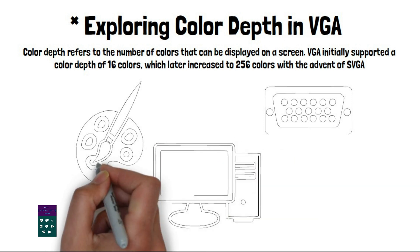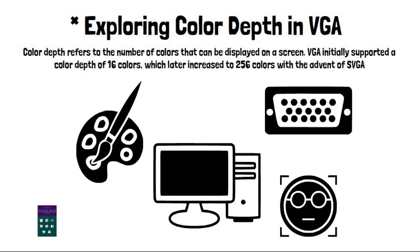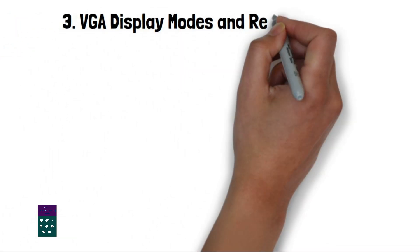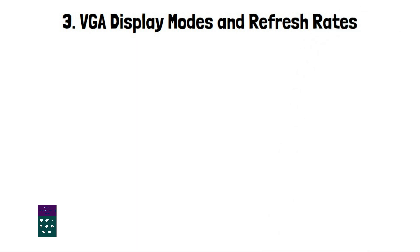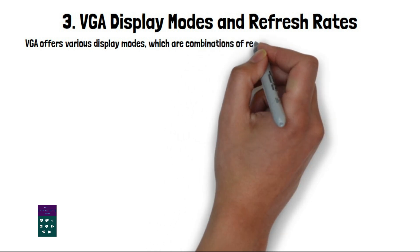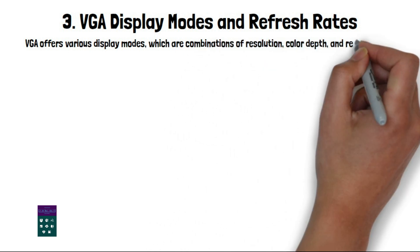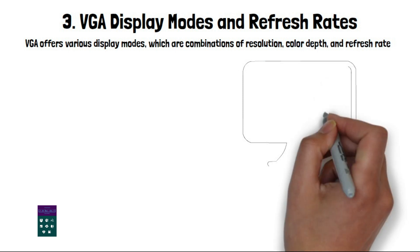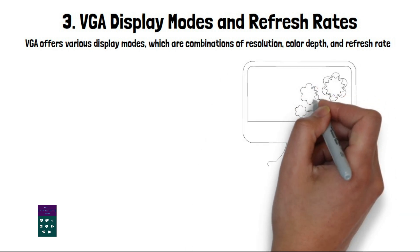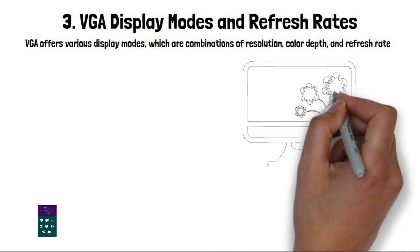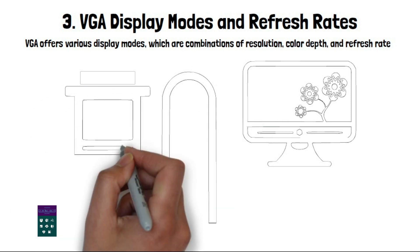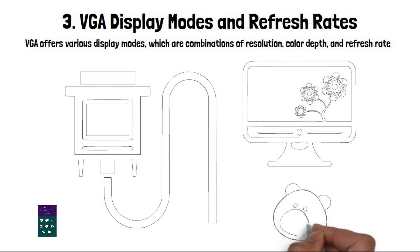This allows for realistic and vibrant images on VGA monitors. VGA display modes and refresh rates. VGA offers various display modes, which are combinations of resolution, color depth, and refresh rate. Some common display modes include 640x480 at 16 colors, 800x600 at 256 colors, and 1024x768 at thousands of colors. The choice of display mode depends on the capabilities of the monitor and the desired balance between resolution and color depth.